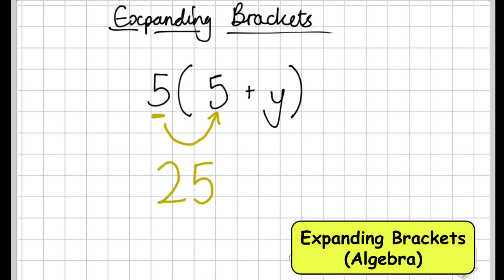Then I take the 5 and I multiply it by the y. So 5 times y gives me 5y. That's the first question. Dead easy.